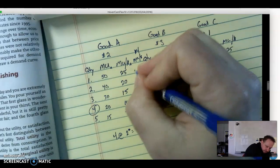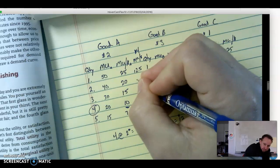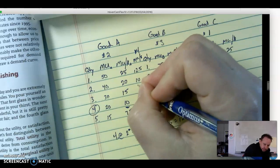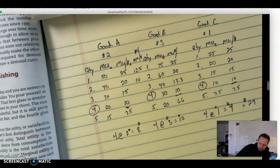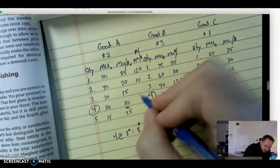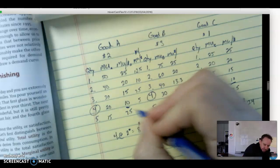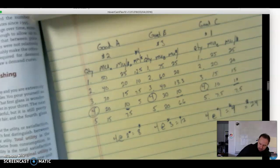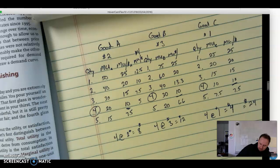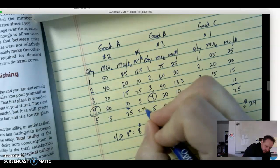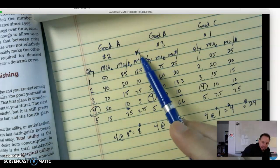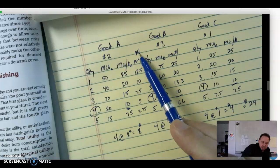...maybe 12.5. 40 divided by 4, that's the new price, is going to be 10. 30 divided by 4 is 7.5. 20 divided by 4 is 5. 15 divided by 4, we're not going to use that one anyway, but we'll do it just for fun - 3.75. So these are our new marginal utilities per dollar based on the new price.